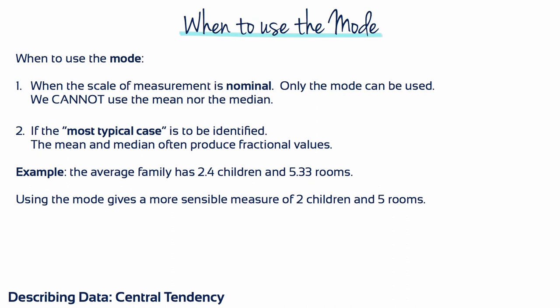And lastly, it's better to use the mode than the other two measures of central tendency when the scale of measurement is nominal. Only the mode can be used here. We cannot use the mean or the median. And secondly, if the most typical case is to be identified, the mean and median often produce fractional values.